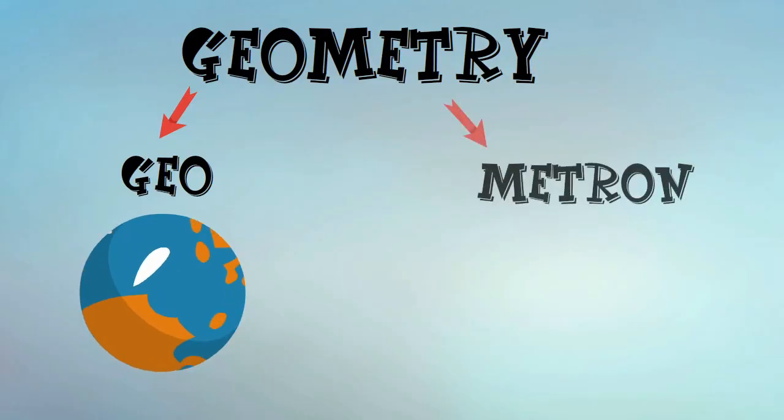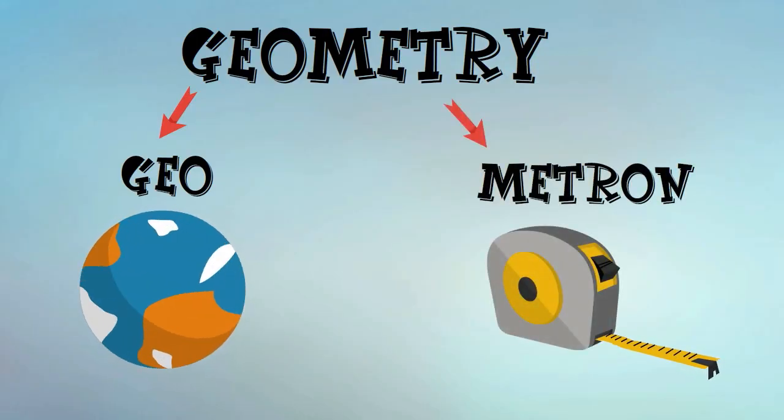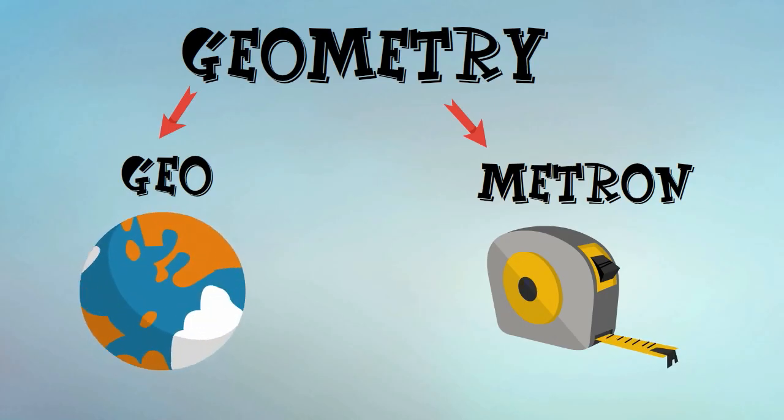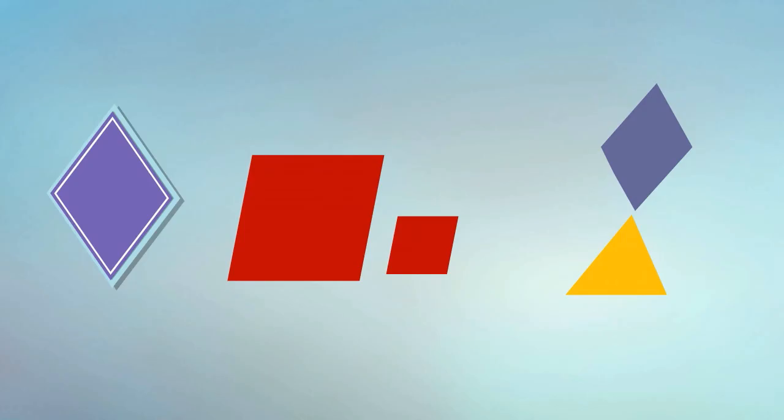First, the word geometry is derived from geo which means the earth and metron which means to measure. Geometry is a branch of mathematics concerned with questions of shape, size, and position of figures and shapes.